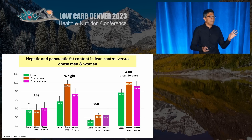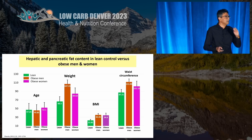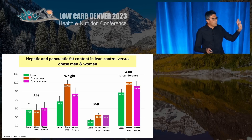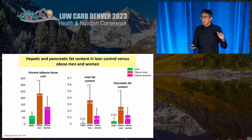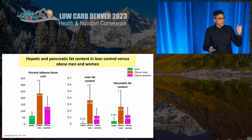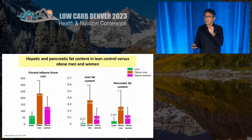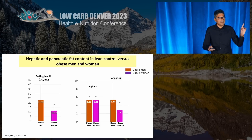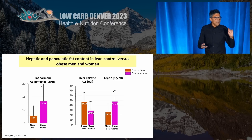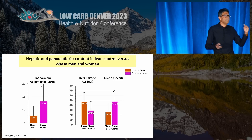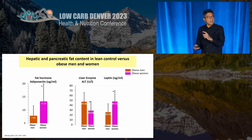Here is a study that looked at obese men and women compared to lean controls. The body mass index of obese men and women was similar and higher than lean controls. However, women are blessed — for the same BMI, the men had more visceral fat, higher liver and pancreatic fat content. They were also more insulin resistant, as evidenced by high fasting insulin and high HOMA-IR scores, accompanied by lower adiponectin, lower leptin, and higher blood markers of liver disease.